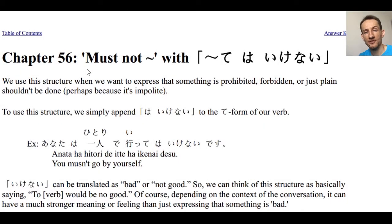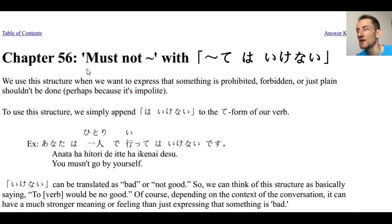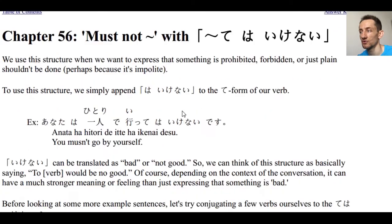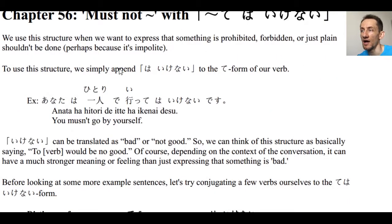Welcome back to another episode of Learn Japanese from Some Guy. In today's video we're going to be looking at chapter 56, where we will learn how to use te wa ikenai to express something is forbidden or must not/should not be done. It's a very useful structure, and it's very easy.